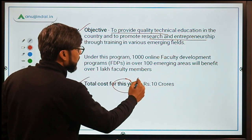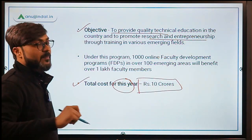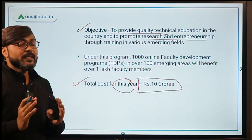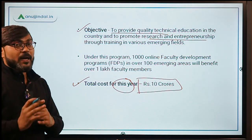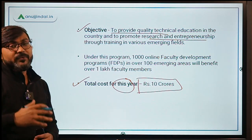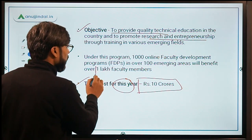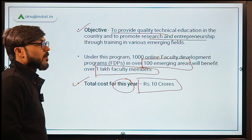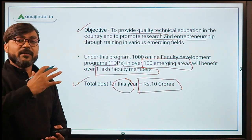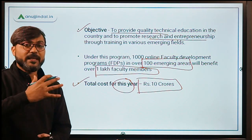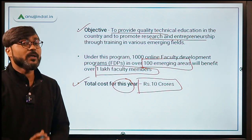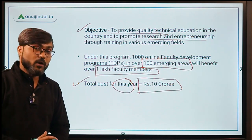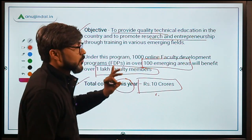The total cost for this year will be Rs. 10 crores. Through this program the government has a target to train around 1 lakh faculty in their respective fields of technology, in 100 emerging areas. These emerging areas will be identified and training will be provided to over 1 lakh faculty members with an estimated cost of Rs. 10 crores for this year.